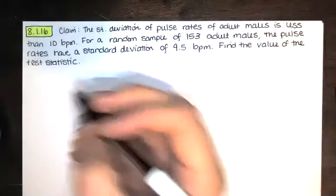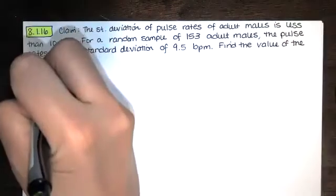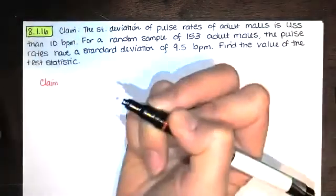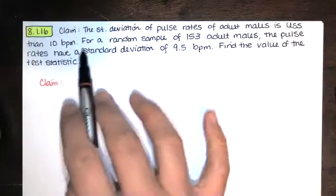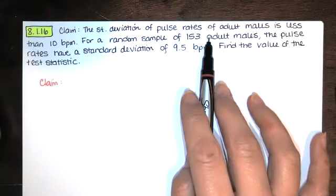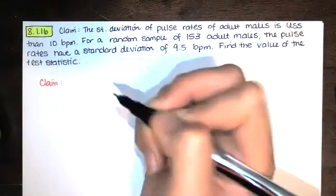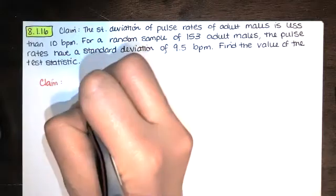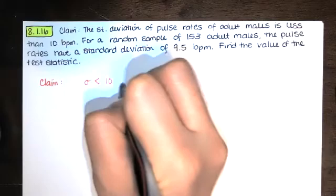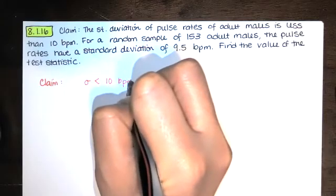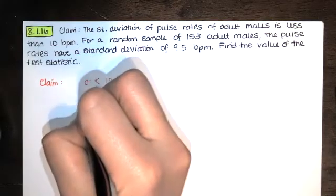So let's write down the claim first. We were told that the standard deviation of pulse rates of adult males is less than 10 beats per minute. So that's the true population standard deviation sigma. That's the claim. So we're claiming that sigma is less than 10 beats per minute. That does not contain the condition of equality.